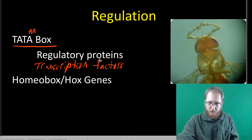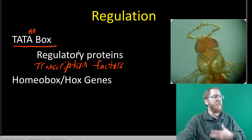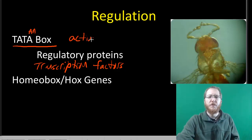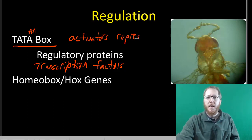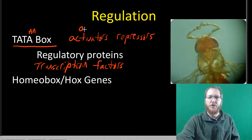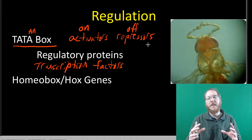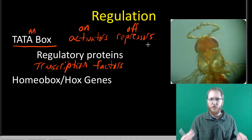Transcription factors, or regulatory proteins, fall into two main groups: activators and repressors. Activators turn on a gene — they start transcription and help RNA polymerase bind. Repressors turn off a gene — they restrict RNA polymerase from attaching and prevent transcription.